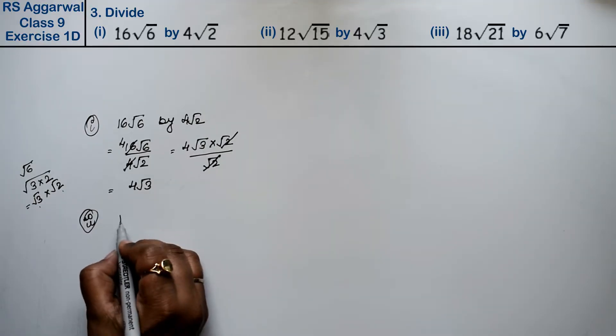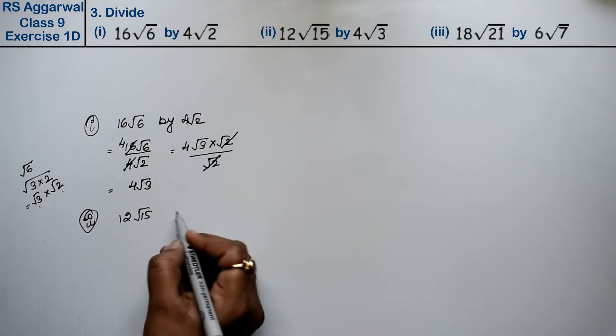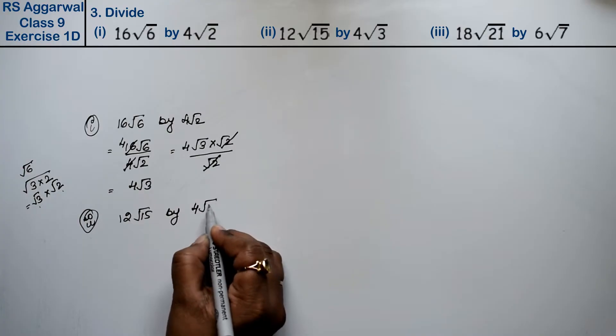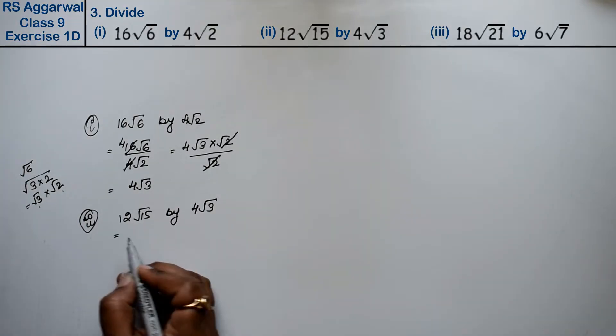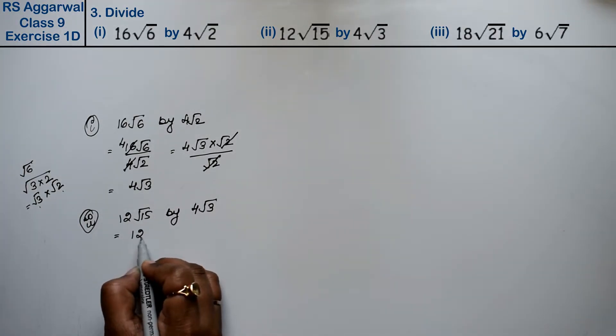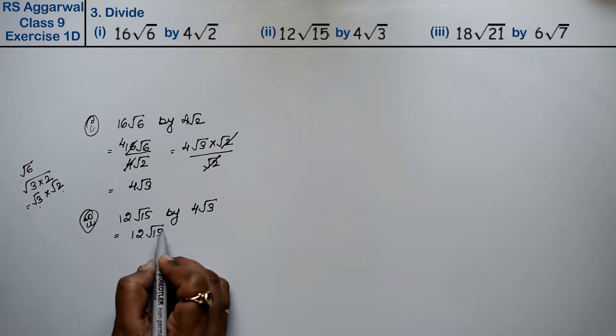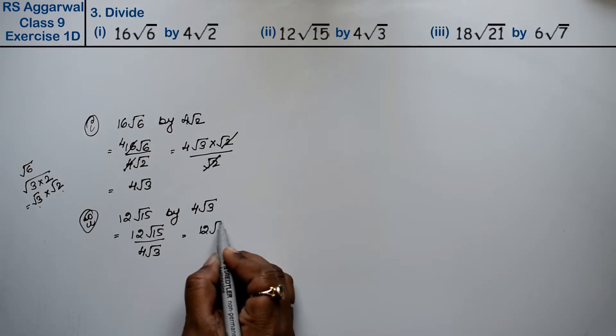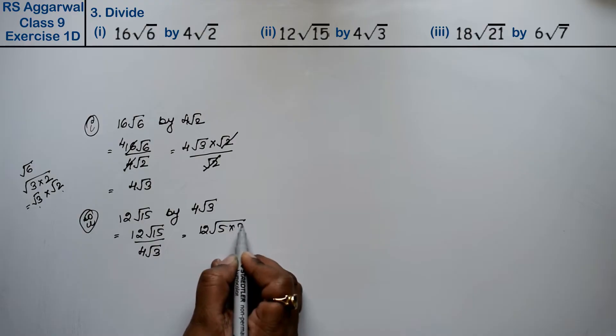The second part is 12√15 by 4√3. So we have 12√15 upon 4√3. Now, 15 has factors 5 times 3.